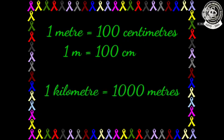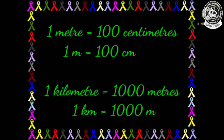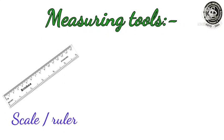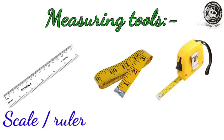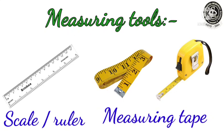And the next one is: one kilometer is equal to 1000 meters — and we can write that in short form too. Now let us see some measuring tools. The first one we call a scale or ruler, and the second one we call a measuring tape.